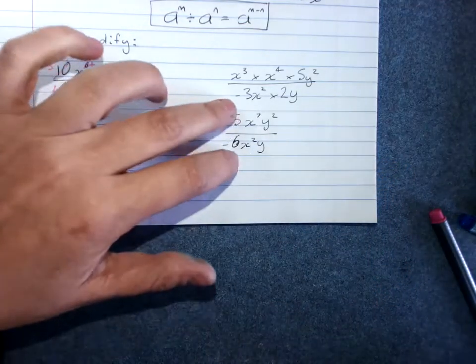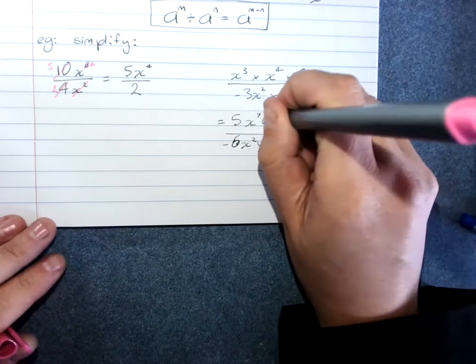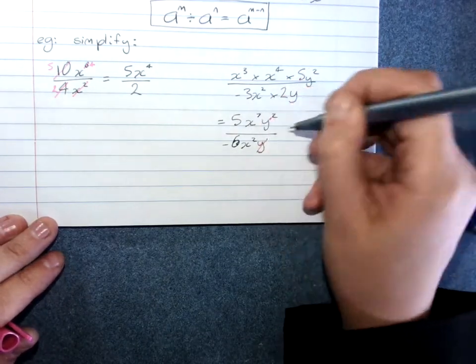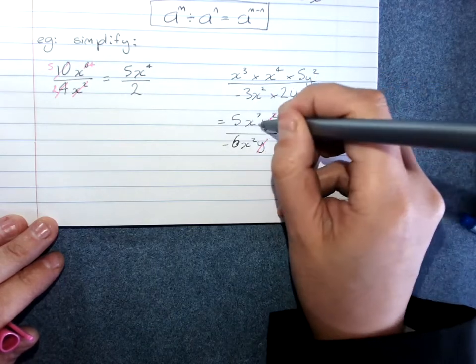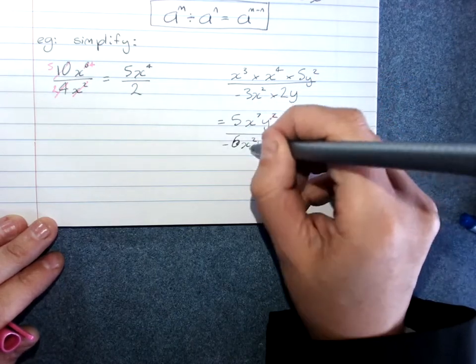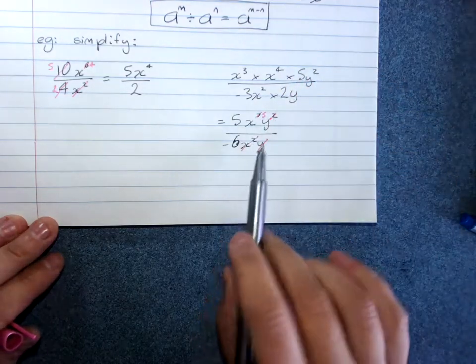There's no common factors of the numbers. y squared divided by y1 is just y on the top there. x to the 7 over x to the 2 leaves me with x to the 5.